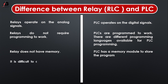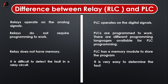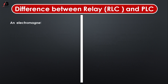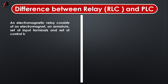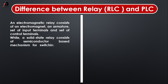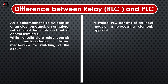It is difficult to detect the fault in a relay circuit. It is very easy to detect and determine the fault in a PLC-based circuit by using software. An electromagnetic relay consists of an electromagnet and armature, a set of input terminals and a set of control terminals, while a solid state relay consists of a semiconductor-based mechanism for switching of the circuit. A typical PLC consists of an input module, a processing element, application, PLC program, power supply, and output module.